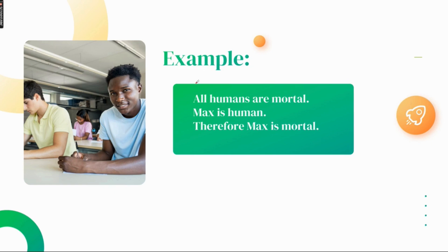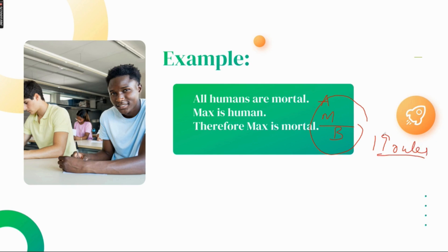In this particular example, if we say 'All humans are mortal,' generally we can symbolize this with A. 'Max is human' — let's symbolize this with M, and 'Max is mortal' — let's symbolize this as B. So A, M, B. How will you prove the validity of this argument? If you want to check the validity by using the nineteen rules — rules of replacement, rules of inference, formal proof of validity — you won't be able to solve that. So for this we need quantification.